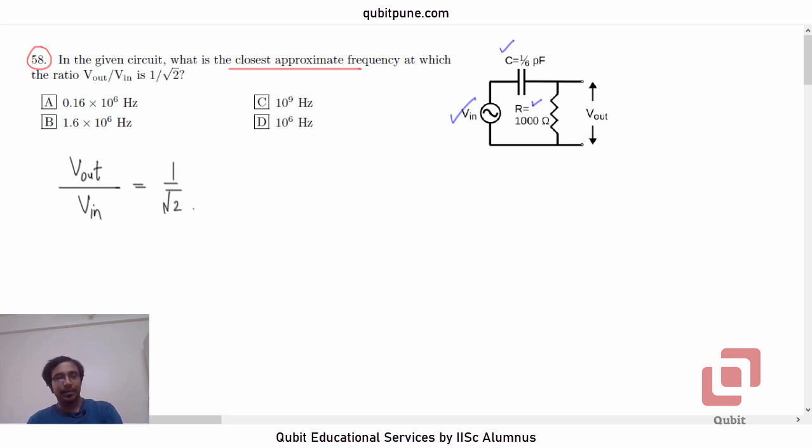Observe that the resistor and the capacitor, they are in series. So, this is also known as an RC series circuit.